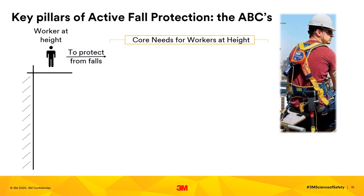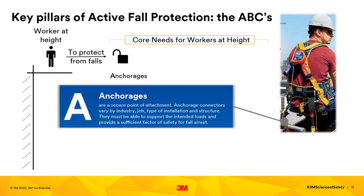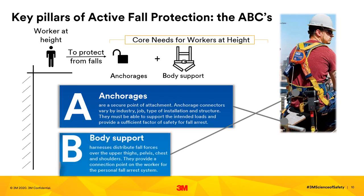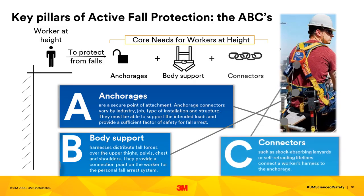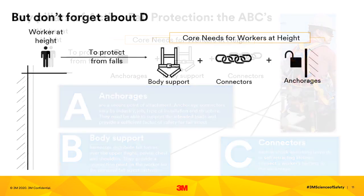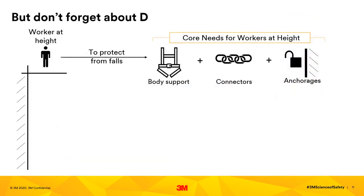To remember the main components of an active fall arrest system, just remember A, B, C. A is Anchorage — a secure point of attachment; anchorage connectors will vary. B is Body support — a harness designed to distribute the forces across the body and provide a connection point on the worker for personal fall arrest systems. C is Connectors — lanyards or self-retracting devices that connect a worker's harness to the anchorage. The ABCs are part of a complete fall arrest system; you can't have one without the other.